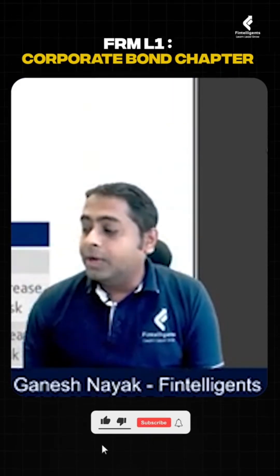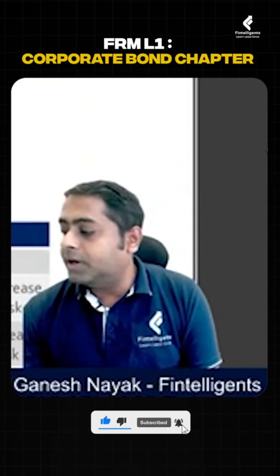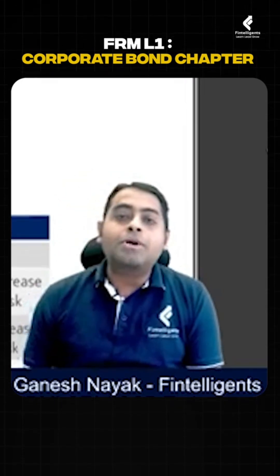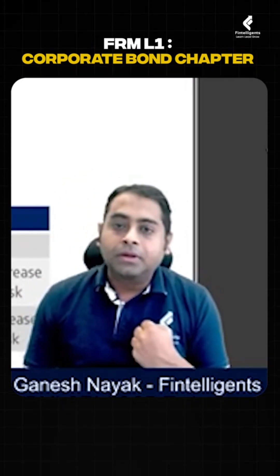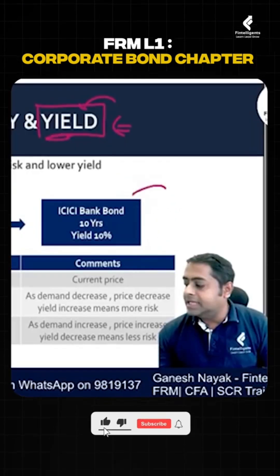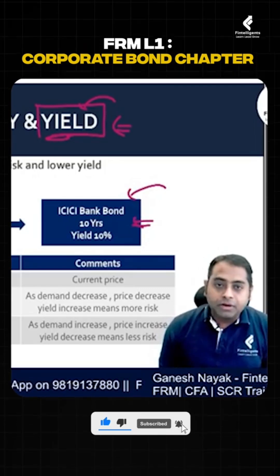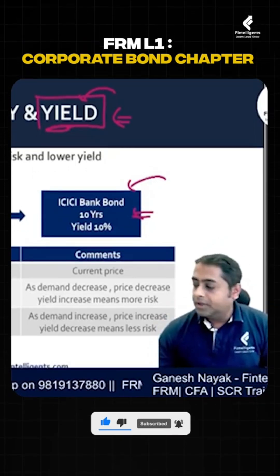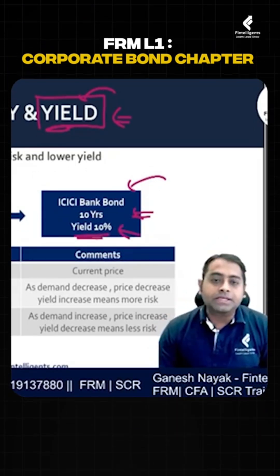Now, liquidity and yield. First we need to understand what is the yield. You can think of it as how much interest I am going to earn. Let me give you a very simple example: suppose I have an ICICI bank bond, it is a 10 year bond, and the yield is around 10 percent.